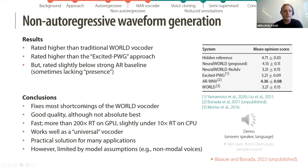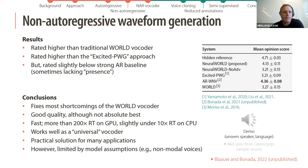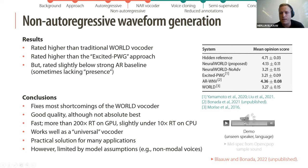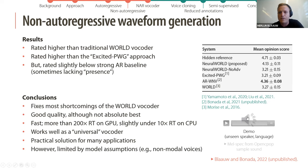The conclusions are that it fixes most shortcomings of the WORLD vocoder, has good quality although not the absolute best, it's quite fast — 200 times real-time on GPU and just under 10 times real-time on CPU — and it works well as a universal vocoder, meaning we can train it on a multi-speaker dataset and then use it for any new voice. Here's a demo where both the speaker and language are unseen.